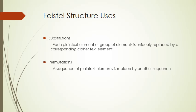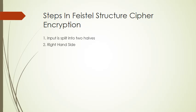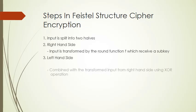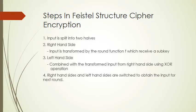The Feistel structure combines substitution and permutation to provide the security principles of confusion and diffusion. The structure contains multiple rounds with ordered sub-keys. The input is split into two parts — right-hand side and left-hand side. The right-hand side is transformed by a round function F in each round, before being combined with the left-hand side using an XOR operation. The left and right-hand sides are then switched after each round to obtain the input to the next round.